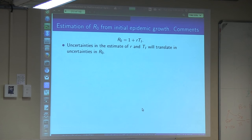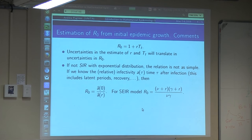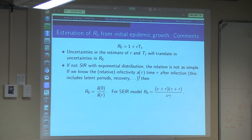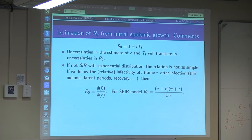Of course, if there are uncertainties on r from the estimation procedure and on the infectious period, these will translate into uncertainties in R0. The relation is somewhat more complicated if you don't have an SIR model. In principle there is a general formula: if you know the relative infectivity, you can express R0 through the ratio of the Laplace transform of the infectivity kernel. In first approximation, if r is small, this formula is anyway true whatever the model.